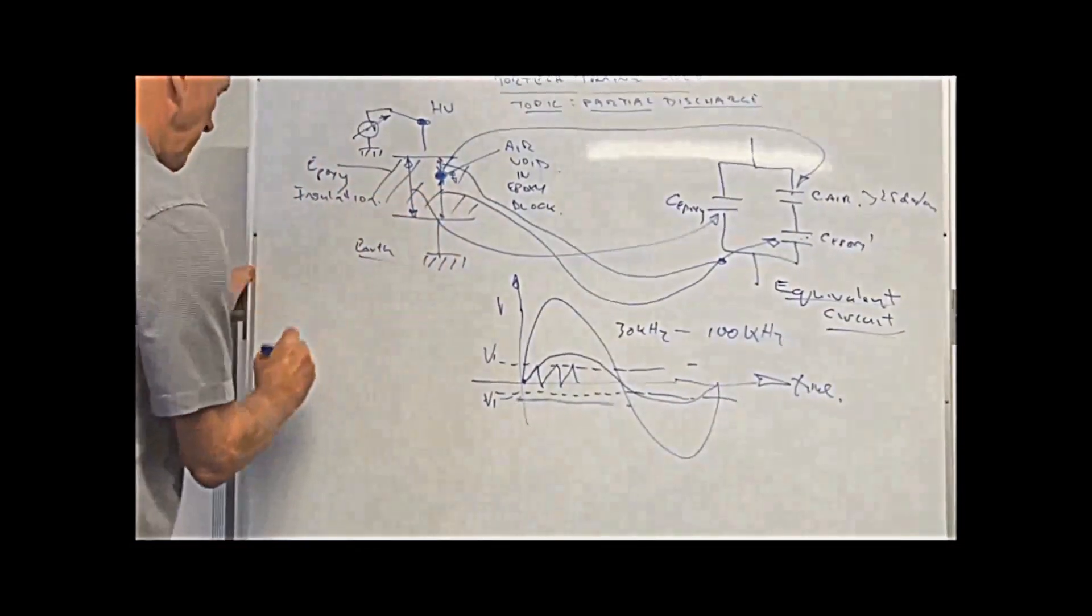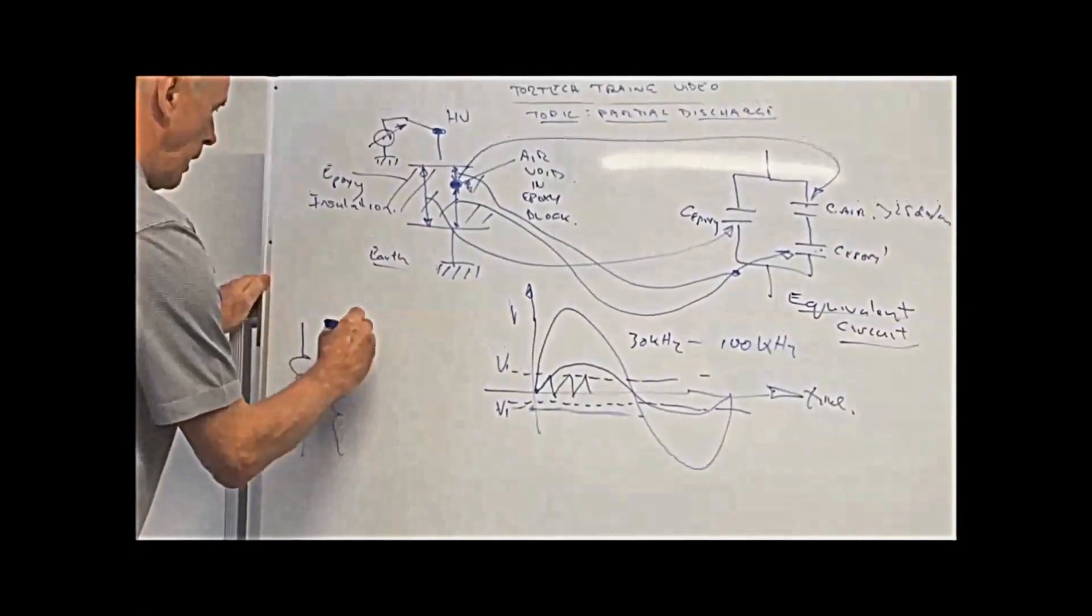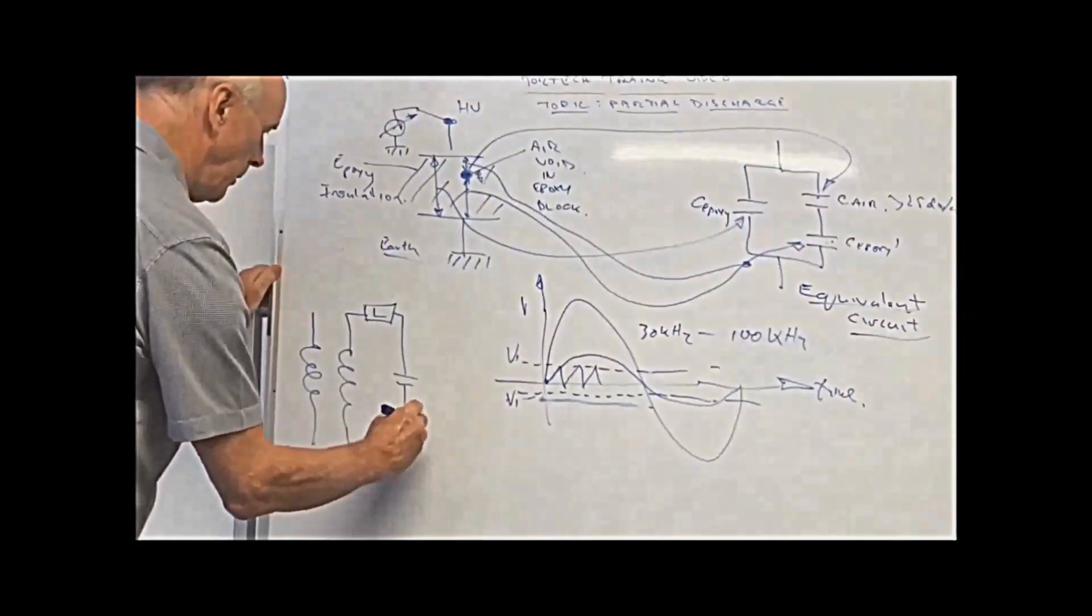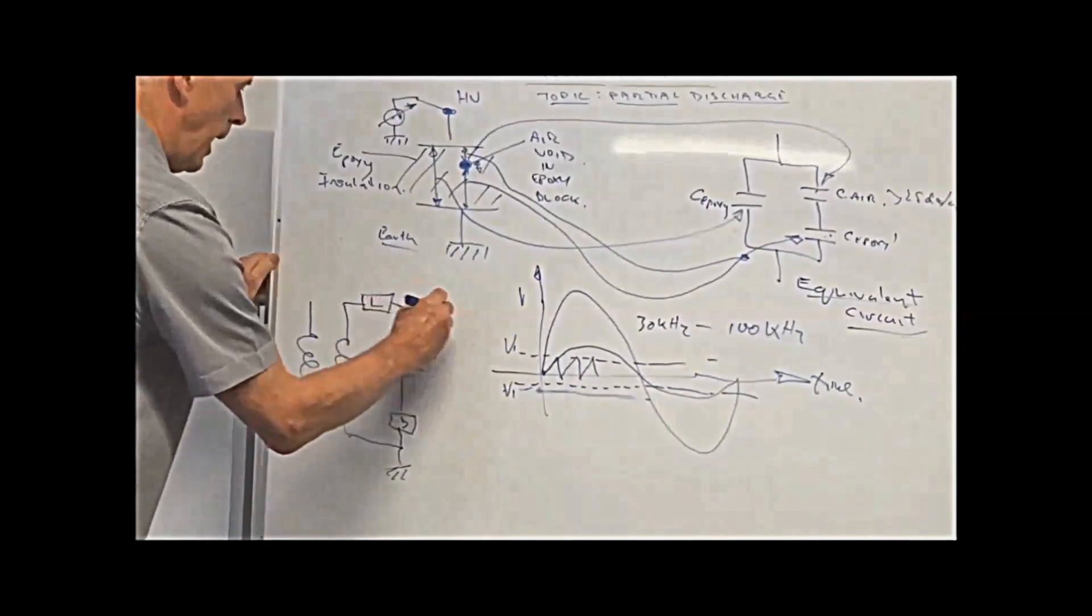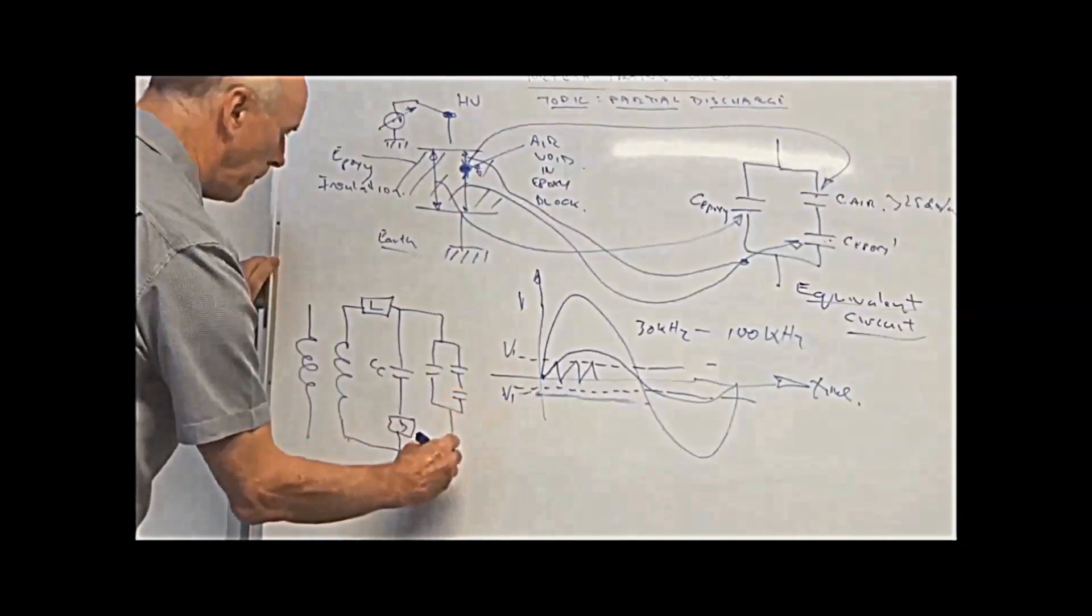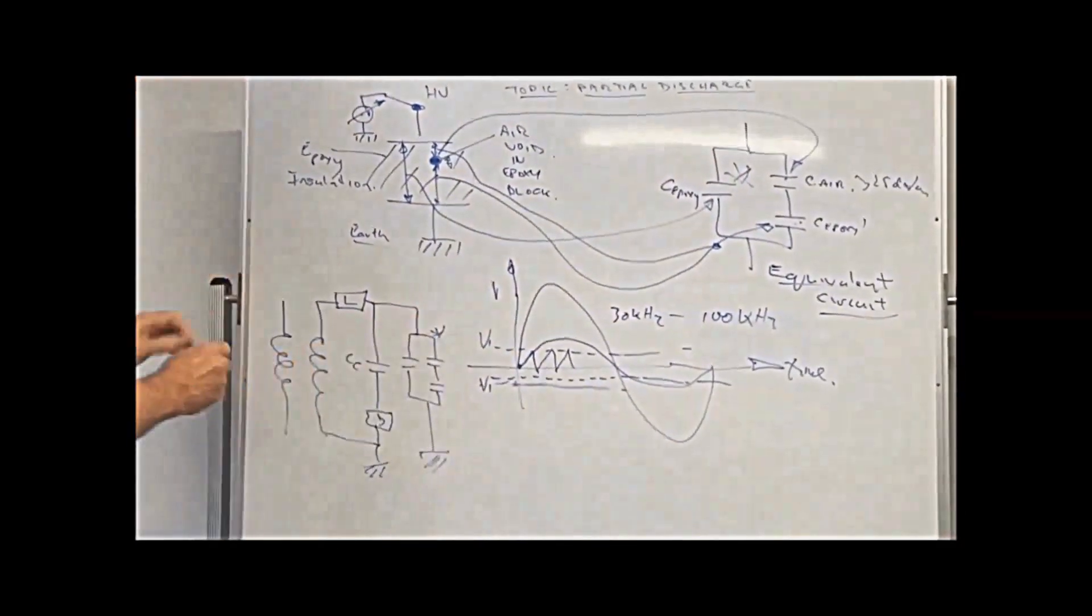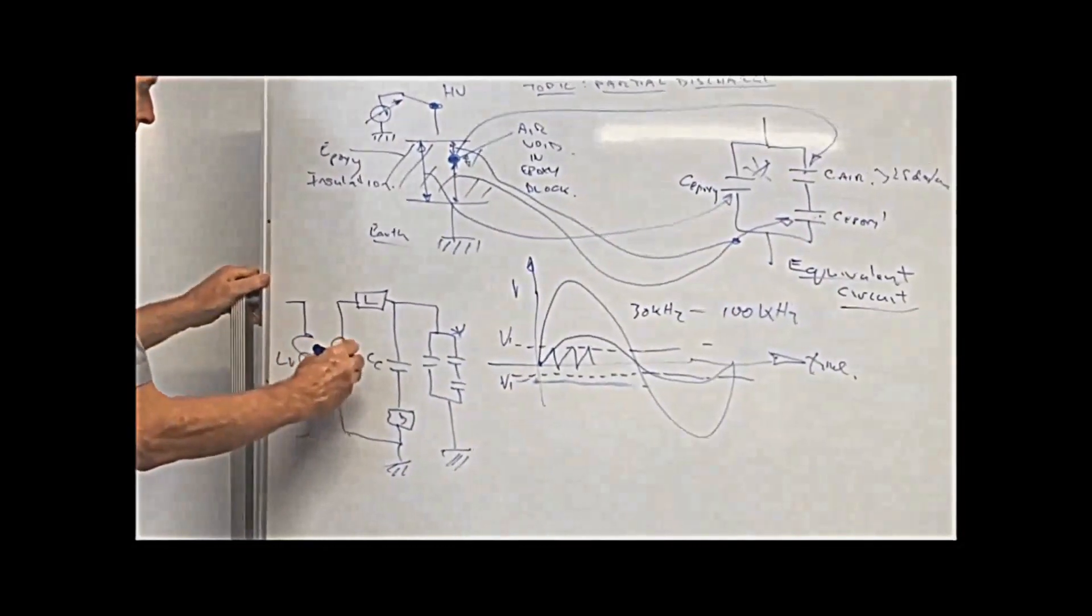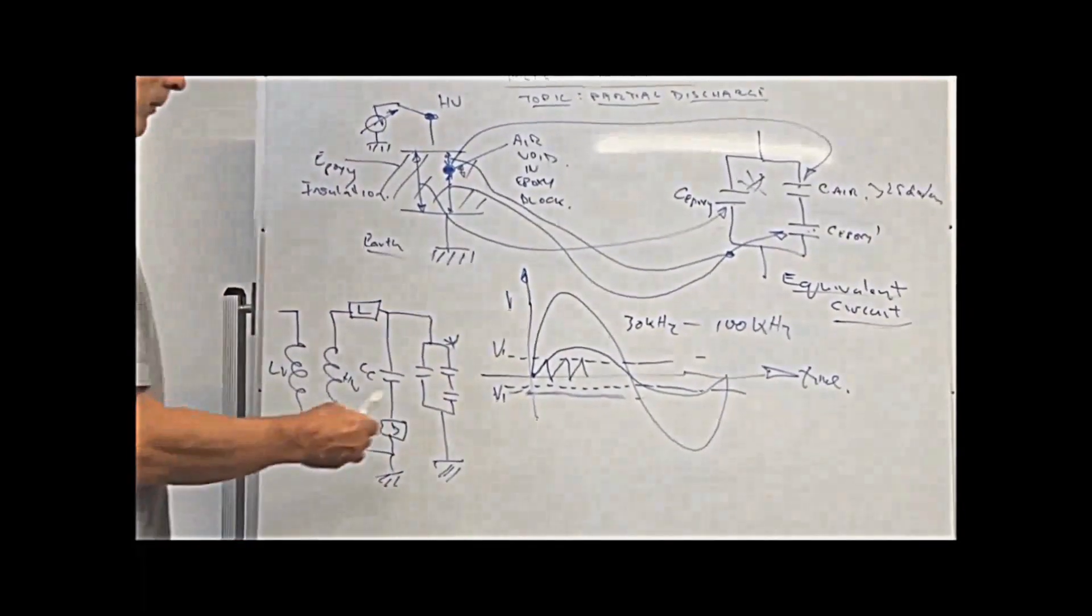Now, it's a little bit more complicated than that because the equivalent circuit that you've actually got is, you've got a high voltage transformer, you've got a filter inductance, and then you've got your detecting circuit. You've got your coupling capacitor. And then over here, you've got your test object, which looks like this, which is the same as this here. So this is the low voltage side of the test, the high voltage side of the testing transformer. This is the filter to stop any noise coming through from the high voltage transformer from the generator. And you've got your detecting circuit.